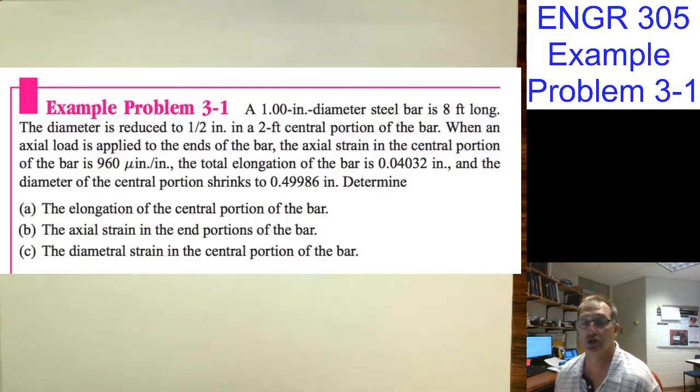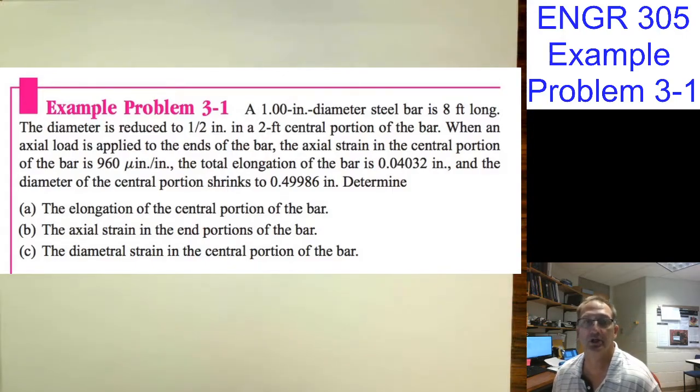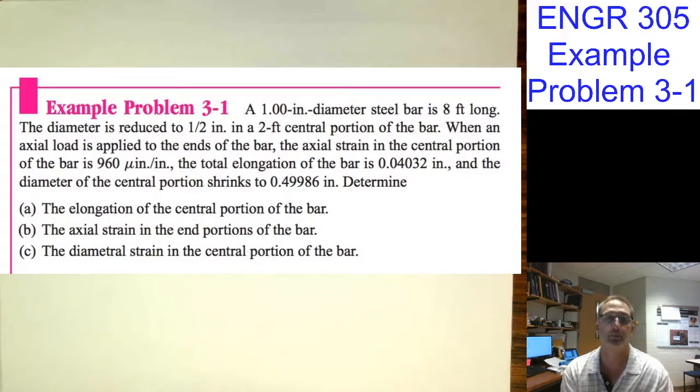The total elongation of the bar is 0.04032 inches, and the diameter of the central portion shrinks to 0.49986. Find the elongation of the central portion, the axial strain on the end portions of the bar, and the diametral strain in the central portion of the bar.